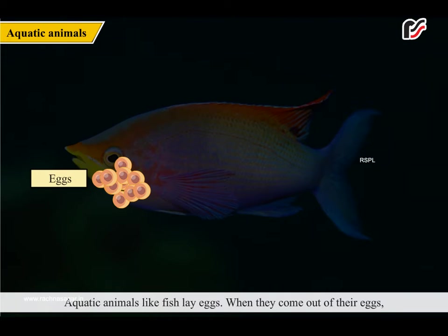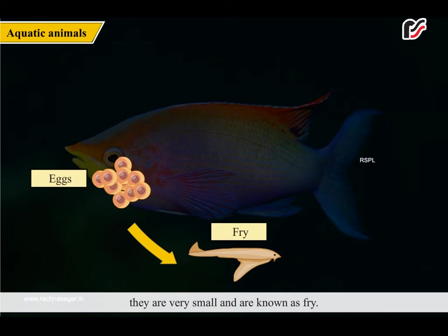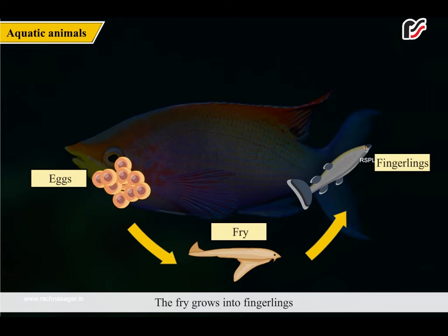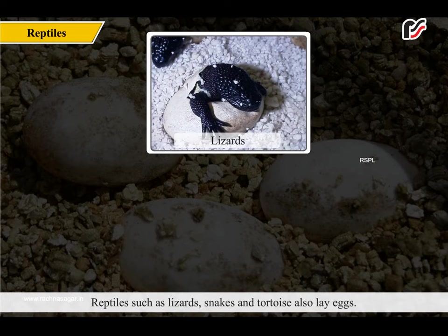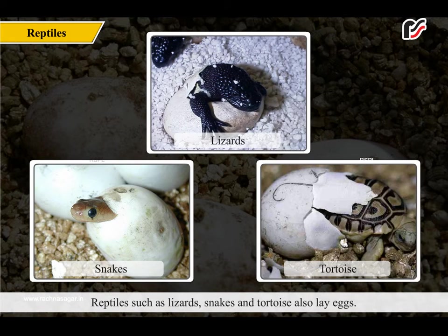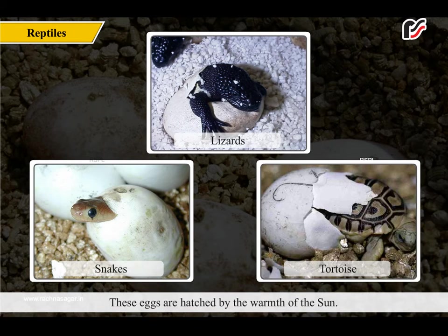Aquatic animals like fish lay eggs. When they come out of their eggs, they are very small and are known as fry. The fry grows into fingerlings, which further grow to become adult fish. Reptiles such as lizards, snakes and tortoise also lay eggs. These eggs are hatched by the warmth of the sun.